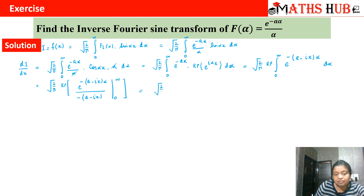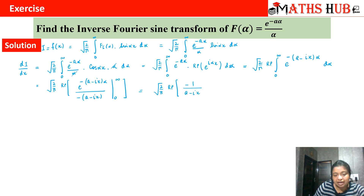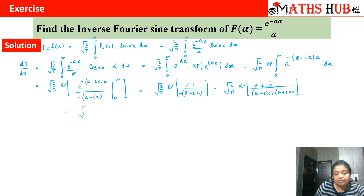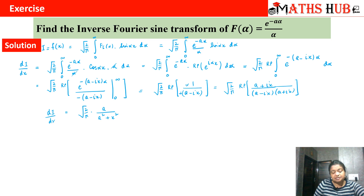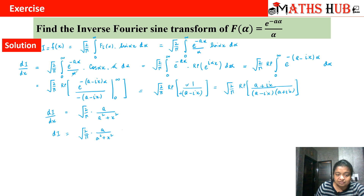Applying the limits, e^(−∞) = 0 and e^0 = 1, giving −1/(a − ix). The minus signs cancel, and rationalizing by multiplying by the conjugate (a + ix) gives Re[(a + ix)/(a² + x²)]. Taking the real part gives a/(a² + x²). So dI/dx = √(2/π) × a/(a² + x²), which is a simple differential equation.